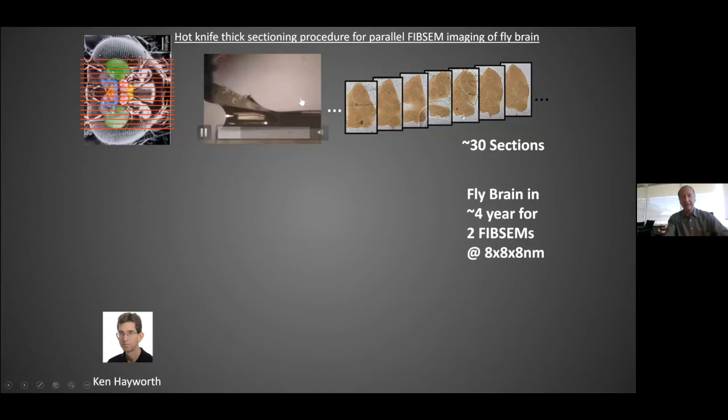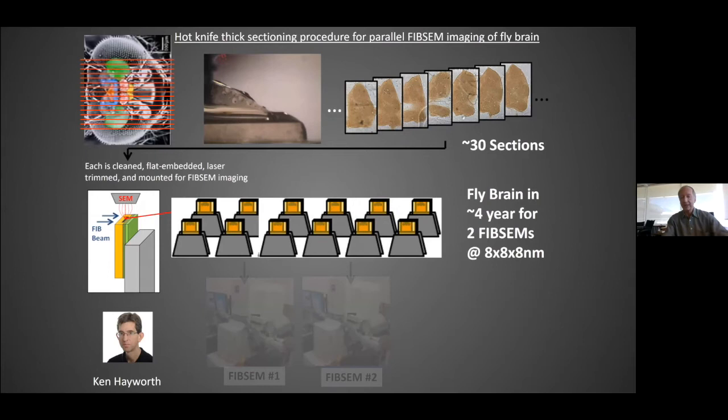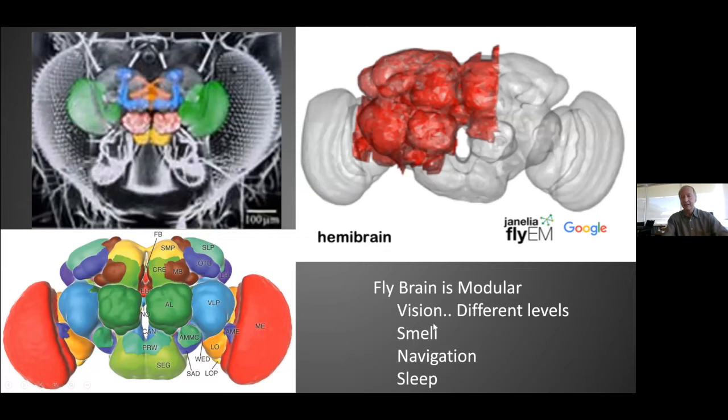So we cut them without slicing loss. And this is where Ken Hayworth came in, and he developed this hot knife technique, where you can take the fly brain, cut it up like a loaf of bread into, let's say, 30 sections. This allows for a very nice parallelization. And now we can go into two machines. Currently, we have a fleet of eight machines doing this kind of work. Initially, this allowed us to get a dataset, which we call the hemibrain, which is just this middle portion of the brain, which contains the smell, navigation, sleep functions. There are a lot of little different parts and modules in here, which you can access.